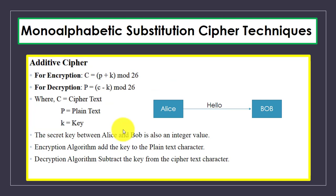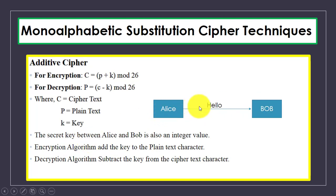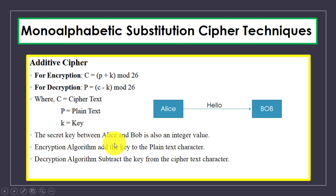Suppose we have two users, Alice and Bob. Alice wants to send a message to Bob and they are using a secret key shared between them. The key is simply an integer value used for encryption and decryption. In the encryption algorithm we add the key to the plaintext, and in the decryption algorithm we subtract the key from the ciphertext.